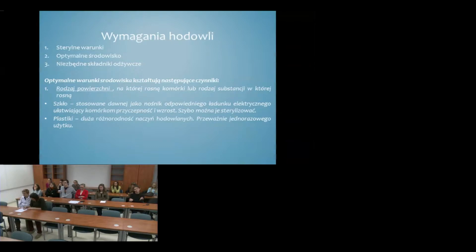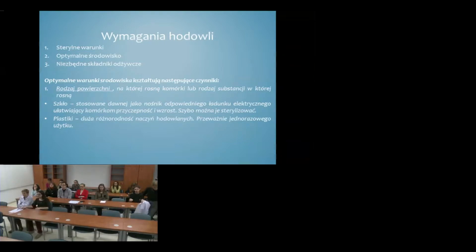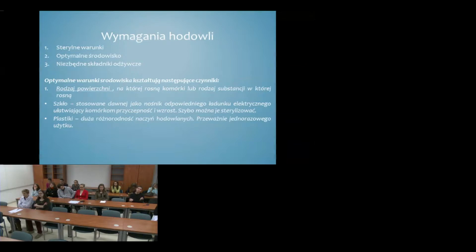Jakie są wymagania odnośnie hodowli komórkowych? Po pierwsze sterylne warunki, w których nie będzie dochodziło do różnych infekcji i zakażeń. Najbardziej popularnymi zakażeniami są zakażenia grzybicze, prowadzące w niesterylnych warunkach do infekcji pożywki lub innych elementów hodowli. Kluczowym warunkiem jest sterylność i odkażanie wszelkich powierzchni. Po drugie wymagane jest optymalne środowisko oraz niezbędne składniki odżywcze, czyli pożywki i media.